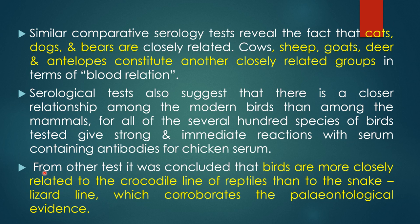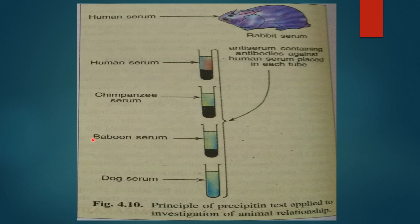From other tests it was concluded that birds are more closely related to the crocodile line of reptiles than to the snake-lizard line, which corroborates the paleontological evidence. This is illustrated by a picture explaining the principles of the precipitation test applied to investigate animal relationships. When human serum is injected into a rabbit, the rabbit produces an antibody against it. This antibody is then added to human serum, chimpanzee serum, baboon serum, and dog serum to analyze the relationships between these animals using the precipitation test.